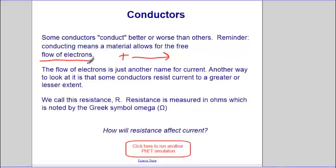The flow of electrons, or charges we should say, is just another word for current because it's not always electrons. Another way to look at this is that some conductors resist current to a greater or lesser extent.